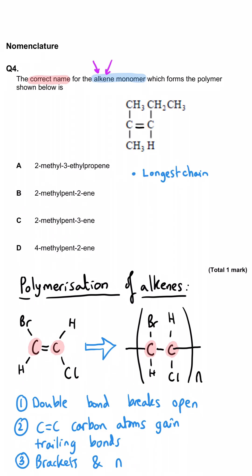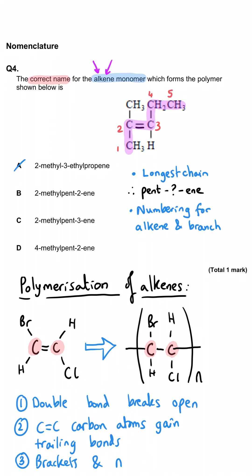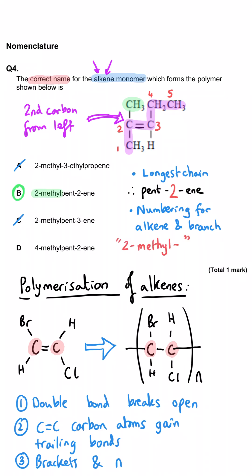Now we know what the alkene would look like, we need to work out its name. First, find the longest chain length: this is a very wonky chain but it is a chain of five, so this is going to be pentene — we can rule out A because it has propene as the alkene. Then we look at the branching: we only have one branch, which is a methyl group. We keep our numbers as small as possible, so the alkene is at position two and the methyl group is also at position two. So it is going to be 2-methylpent-2-ene — B is the correct answer.